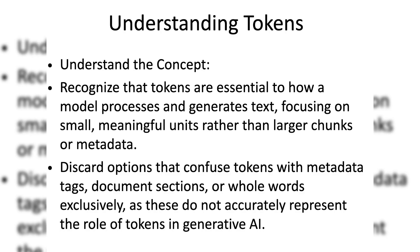To solve this question, the first step is to understand the purpose of each option and then eliminate one that clearly doesn't fit. Recognize that tokens are essential to how a model processes and generates text, focusing on small, meaningful units rather than larger chunks or metadata. Discard options that confuse tokens with metadata tags, document sections, or whole words exclusively, as these do not accurately represent the role of tokens in generative AI.